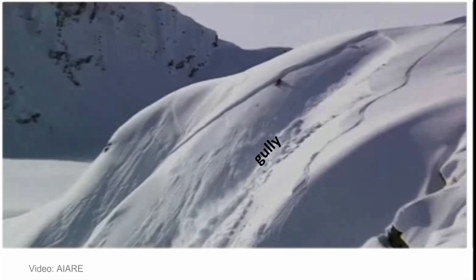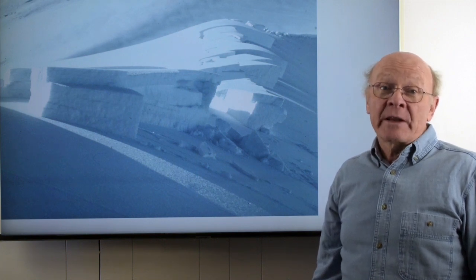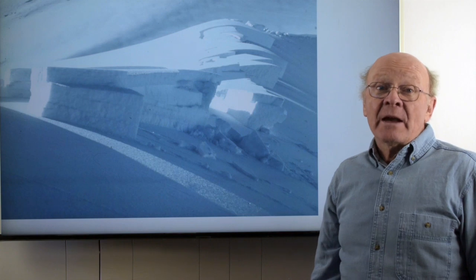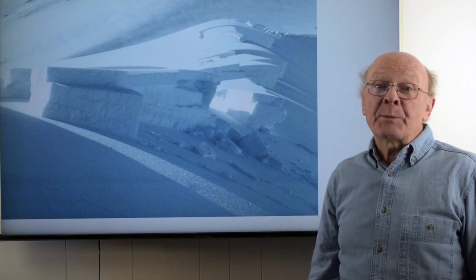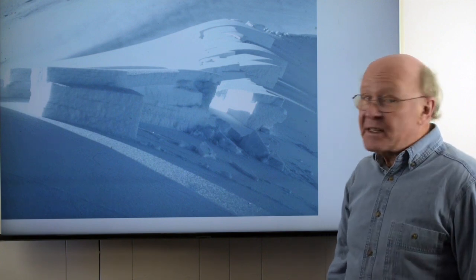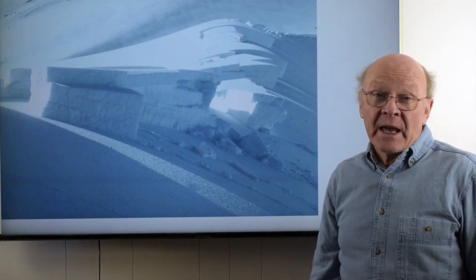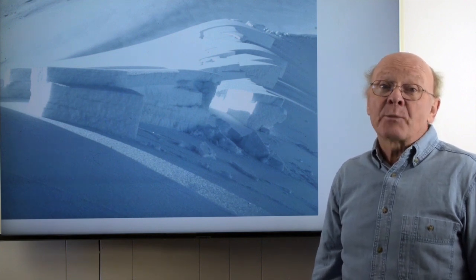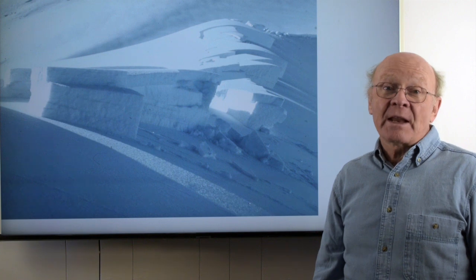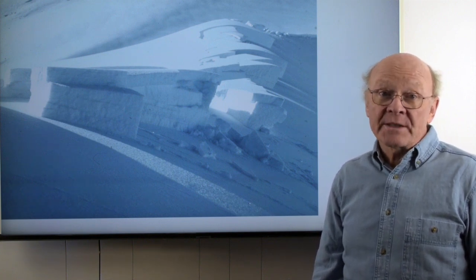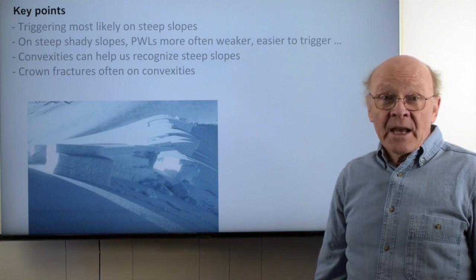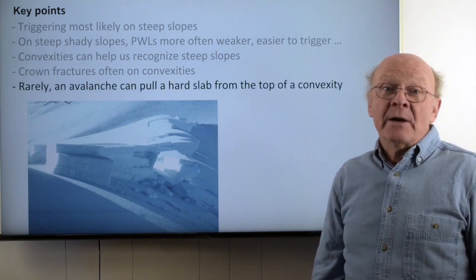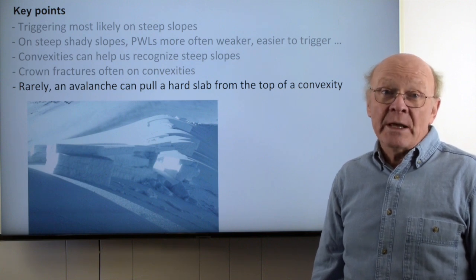Usually, being on the highest part of a convexity is low risk. However, in this photo, a hard slab was on top of a widespread persistent weak layer. The crack in the weak layer propagated unpredictably upslope to the top of the convexity. Sometimes such propagations can cross a gentle bench, pulling the slab down over the convexity. When avalanche bulletins mention that propagations like this are occurring, I avoid avalanche terrain — often heading to a ski area or nordic trails. Rarely, an avalanche can pull a slab from the top of a convexity, and very rarely from above a gentle bench.